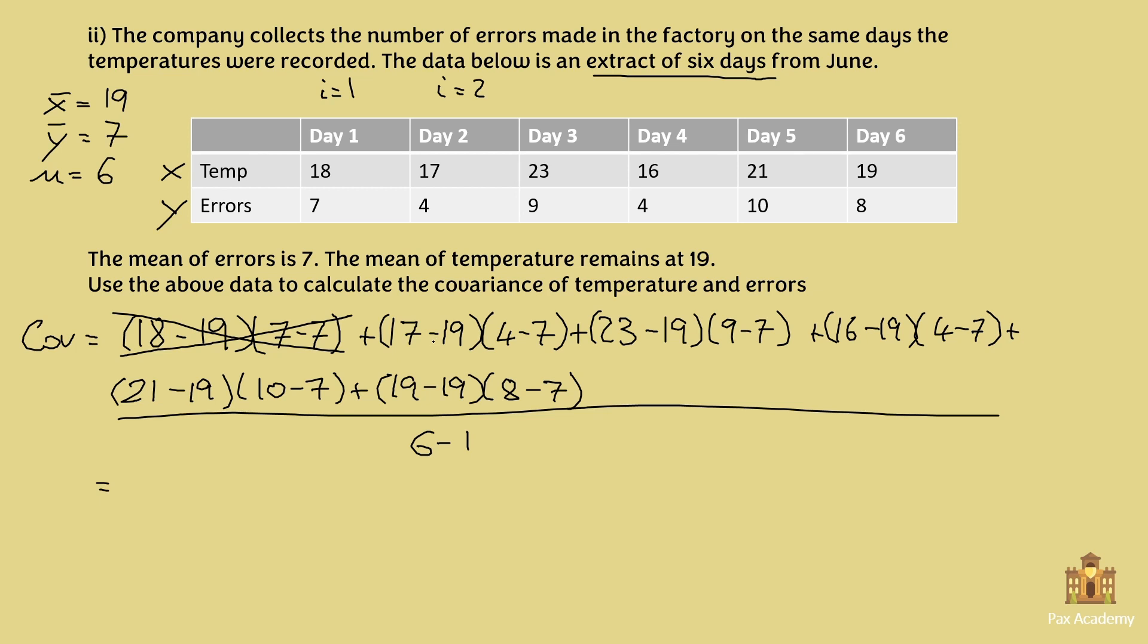Then 17 minus 19 is minus 2, times 4 minus 7, which is minus 3, plus 23 minus 19 is 4, times 2. 16 minus 19 is minus 3, times minus 3. 21 minus 19 is 2, times 10 minus 7 is 3, 2 times 3. And then again here we have 19 minus 19, which is 0. So again, we can forget about this term because it's 0 times something, which is 0.